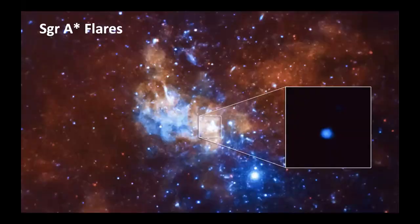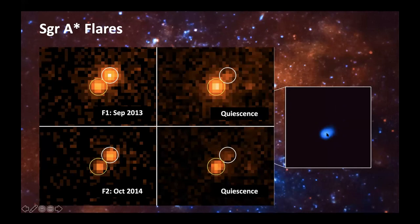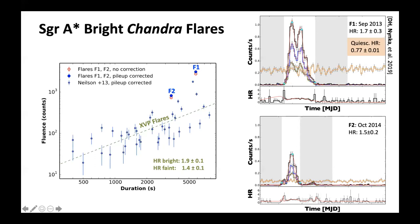Flares are another very interesting phenomenon seen for Sagittarius A*. The persistent source from the Chandra X-ray Observatory is a nearby magnetar that went off in 2013. We've got two very bright flares — the brightest one visible in this movie, and another bright flare also from 2013. A quiescent image shows what Sag A* looks like when it's not flaring. About a year later we saw another very bright flare. Here they are superposed on the distribution of flares — a plot of fluence versus duration for all flares detected during the deep XVP program.